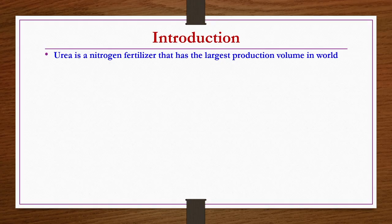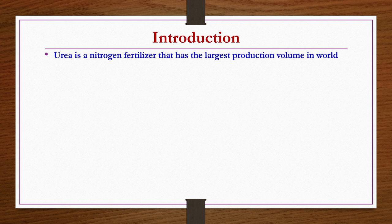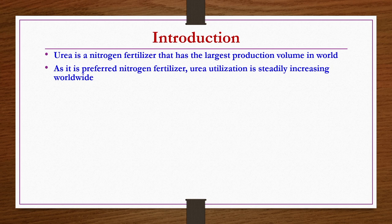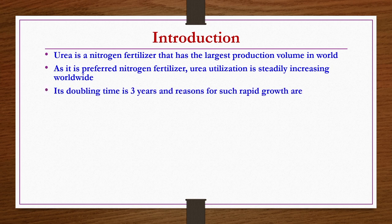Urea is a nitrogen fertilizer that has the largest production volume in the world. Among nitrogen, phosphorus, and potassium industries, nitrogen is the largest. Within nitrogen fertilizer industries, urea is the largest producing component, extensively used as a fertilizer for agricultural purposes. Because it is the preferred nitrogen fertilizer, its utilization is steadily increasing worldwide, with a doubling time of 3 years.